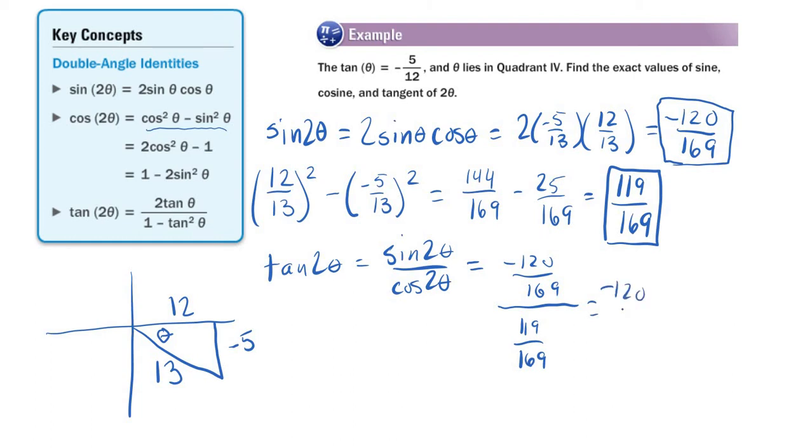So, of course, if I clean that up, negative 120 over 169 times the reciprocal dividing by a fraction. 169 over 119. Divide out, divide out. And you can see what we get there. Negative 120 over 119.